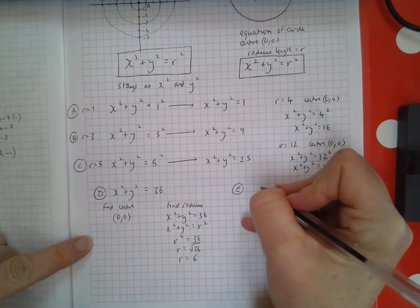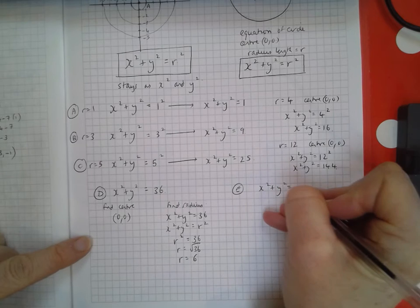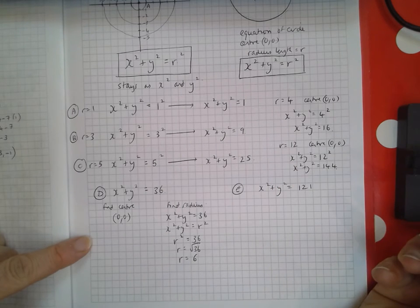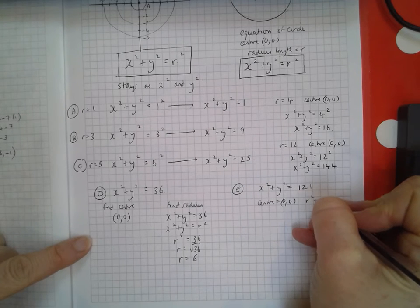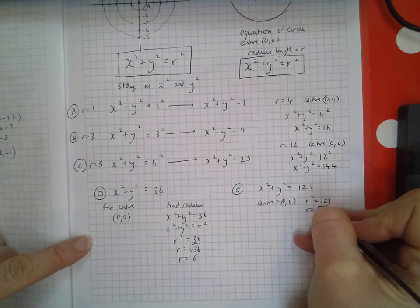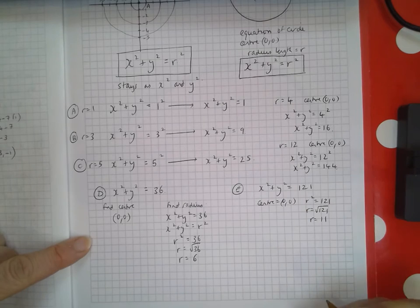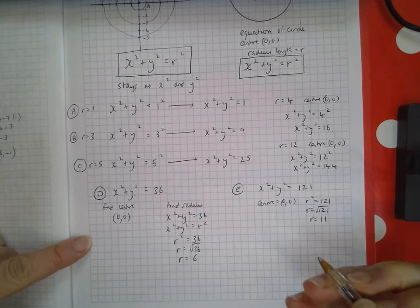Let's do one more. x² + y² = 121. The center is (0,0). r² = 121, so r = √121 = 11. It has center (0,0) and radius 11.